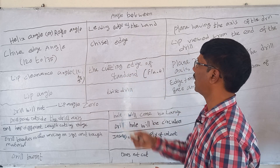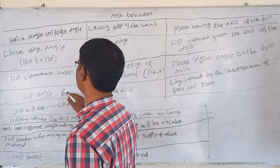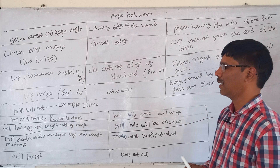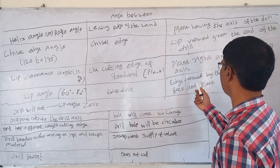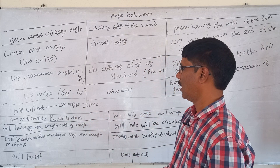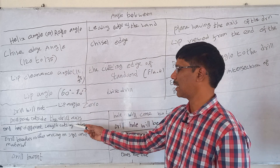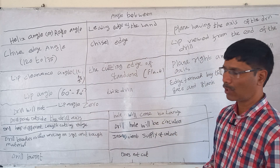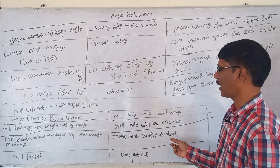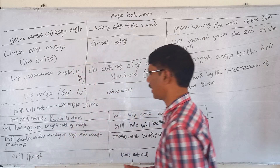The flank is the surface behind the cutting edge. The lip angle varies from 60 to 80 degrees and is the angle formed by the intersection of the face and flank; the drill will not cut when the lip angle is zero. If the drill point is outside the drill axis, the hole will become too large. When the drill has cutting edges of different lengths, the hole will still be circular. A drill breaks when working on soft and tough materials, indicating insufficient coolant supply. When the drill bit is blunt, the drill does not cut.